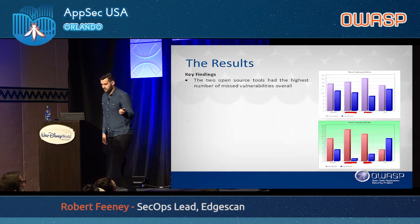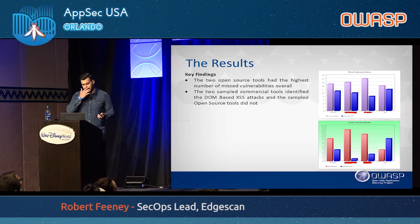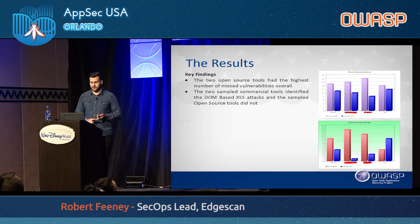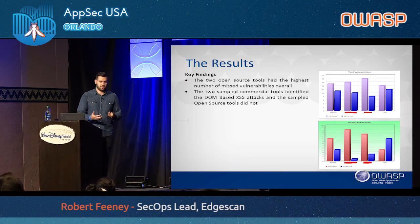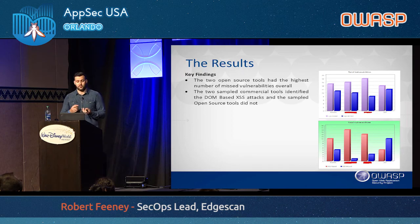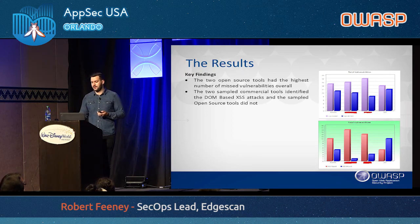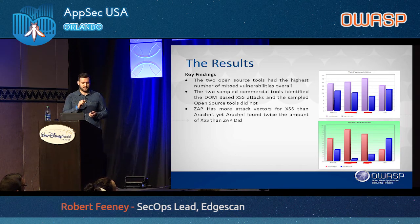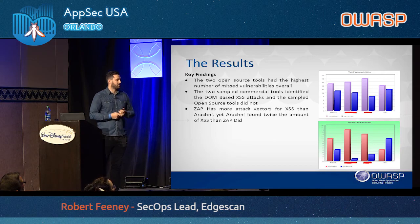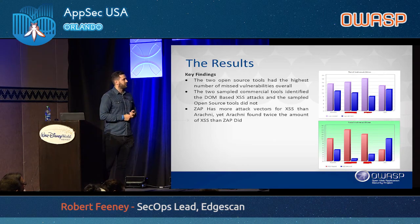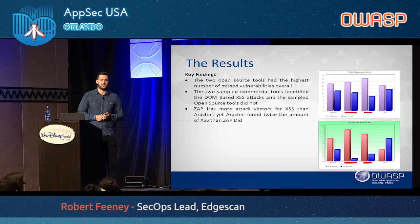The key findings were that the two open source tools had the highest number of missed vulnerabilities overall, and also missed DOM-based cross-site scripting issues. That's not too surprising given that commercial tools have the money and resources to develop those areas. However, one interesting result was that Arachni found more cross-site scripting issues than ZAP, even though ZAP had twice the number of attack vectors. The reason appears to be that Arachni's vectors are of better quality.